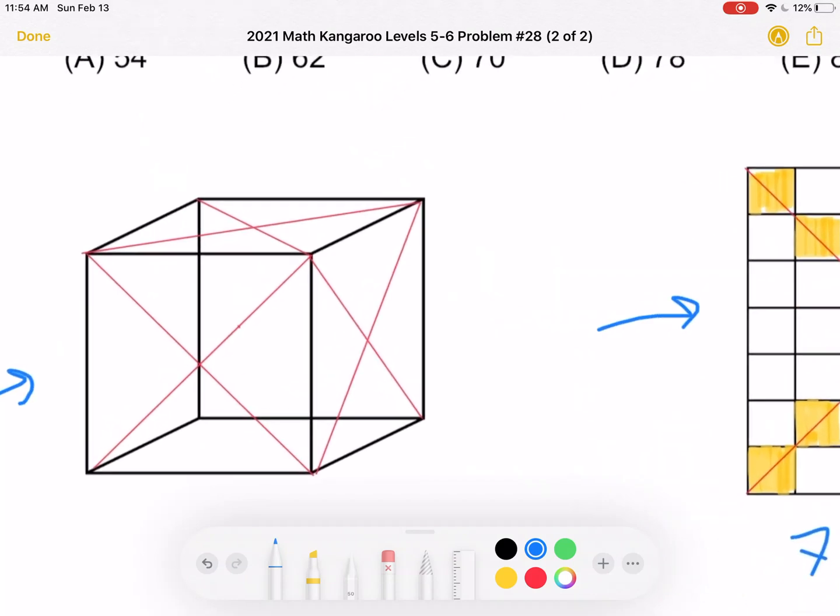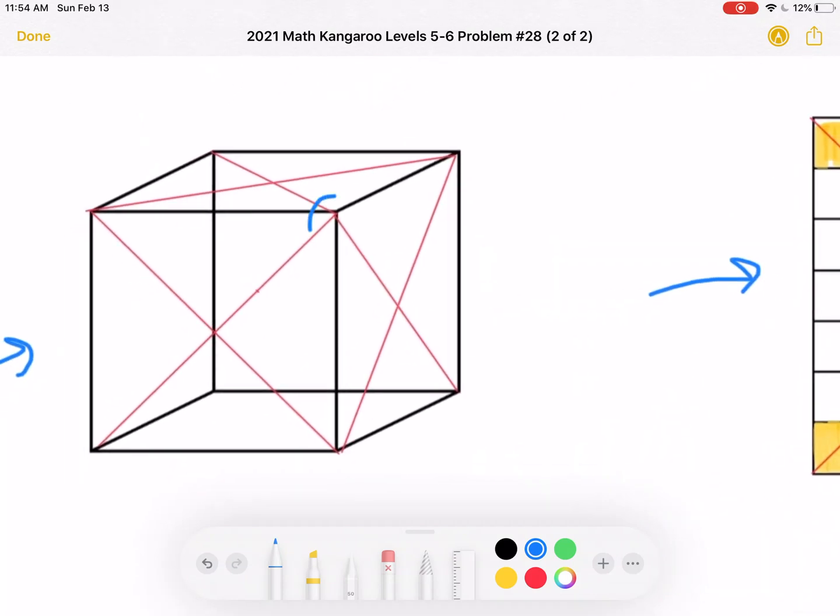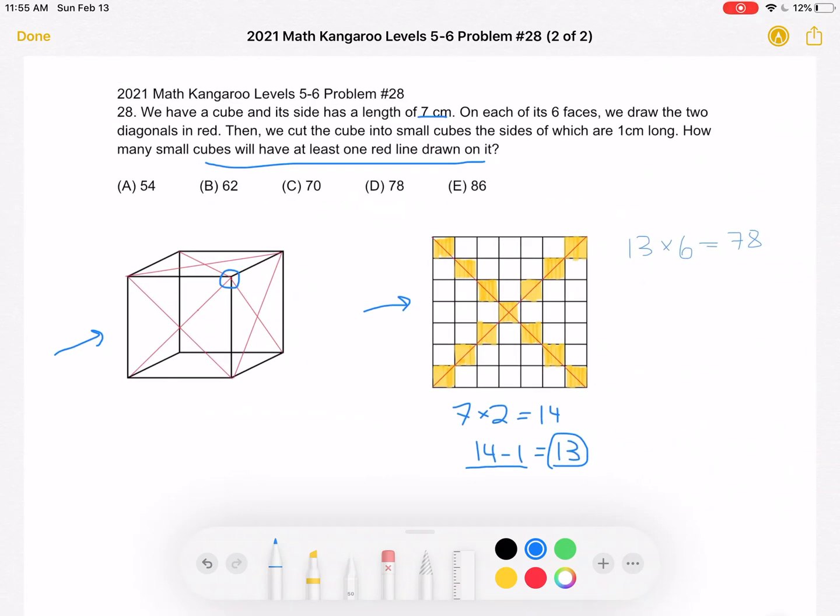However, if we look closer we can see that each of the vertices is being counted three times and we need to only count it once. So in order to subtract what we've over-counted, we do 8 times 2, because there are 8 vertices and we counted each one three times when we should only be counting it once. So we need to subtract those two extra times per vertex that we over-counted.